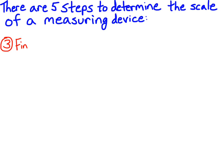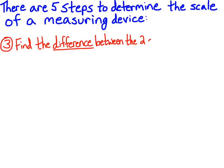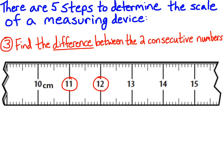The third step is to find the difference between the two consecutive numbers you have chosen. It doesn't matter which numbers you choose, as long as they're consecutive. We've got 11 and 12, so we subtract the smaller number, 11, from the larger number, 12, and we get a difference of 1.